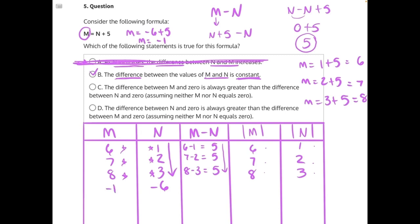Then, the absolute value of M would be the absolute value of negative 1, which is equal to 1. And the absolute value of N would be the absolute value of negative 6, which is equal to positive 6. In this case, the absolute value of N is greater than the absolute value of M. 6 is a greater number than 1, which makes C incorrect.